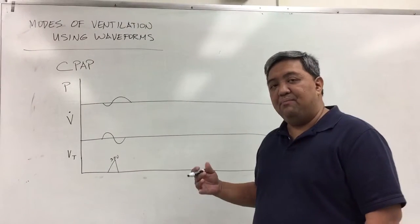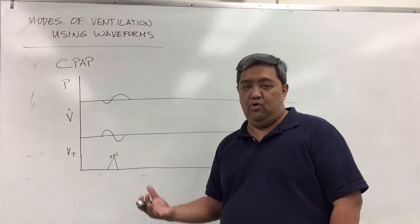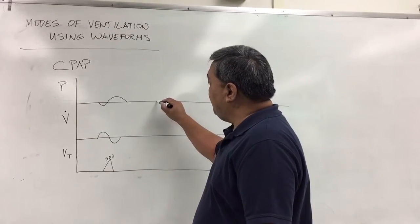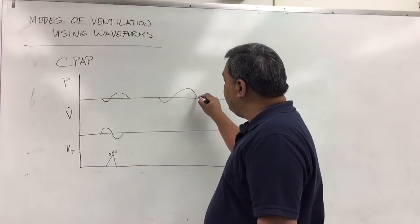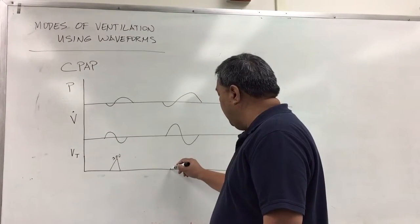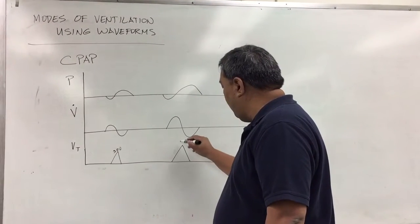With CPAP, the patient controls the flow, the amount of air going in and out, and the speed as well. If the patient takes a deeper breath, that means your waveform may be somewhat bigger, and then you will have a bigger volume.